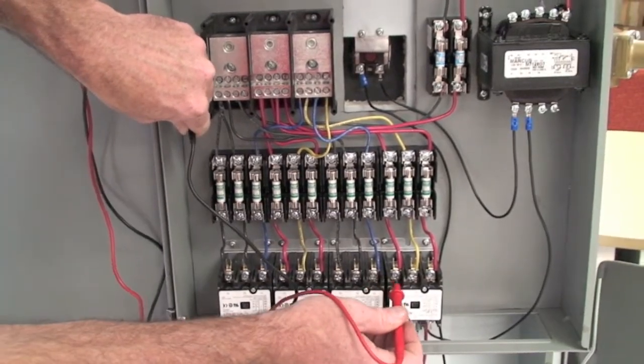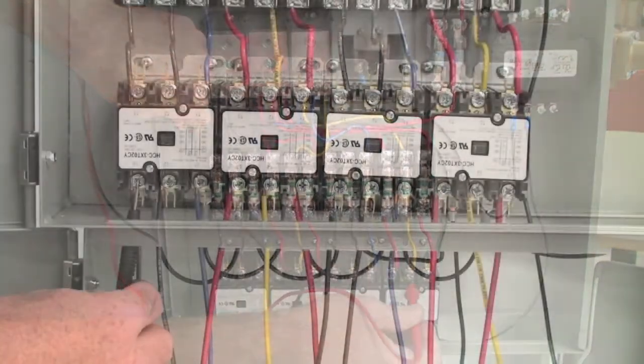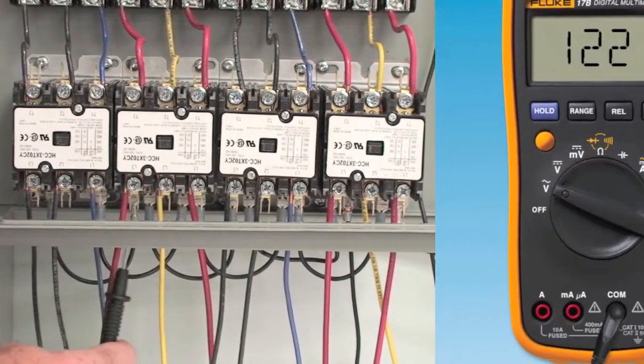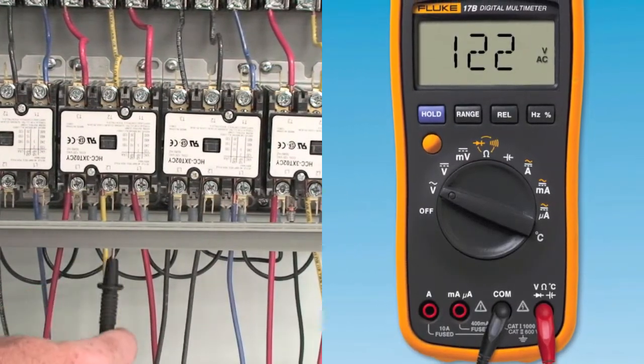If no voltage is measured, replace the corresponding fuse. Next, move the leads from T1, T2, and T3 terminals to the bottom terminals labeled L1, L2, and L3 of each contactor.